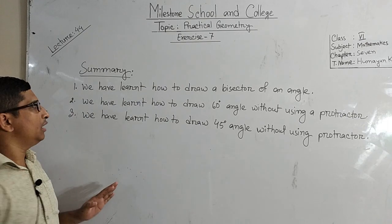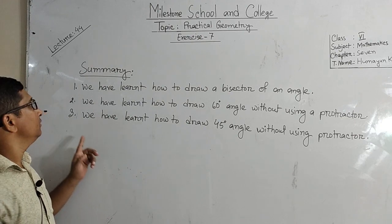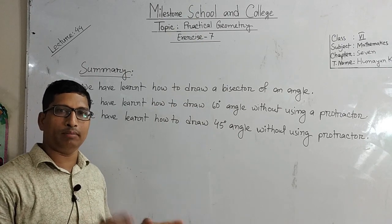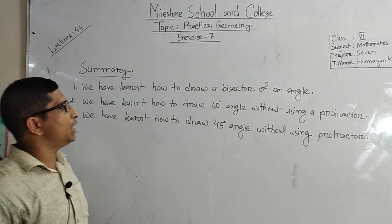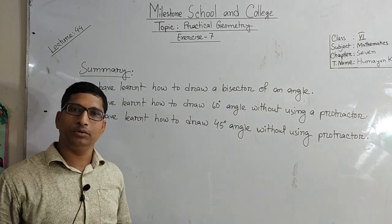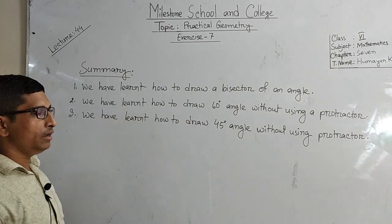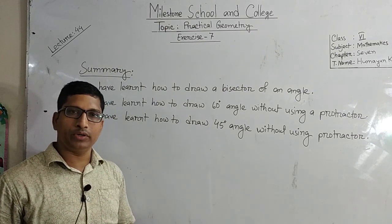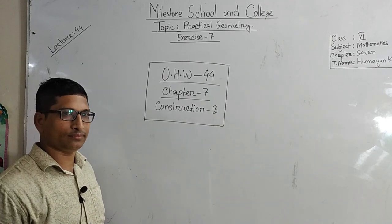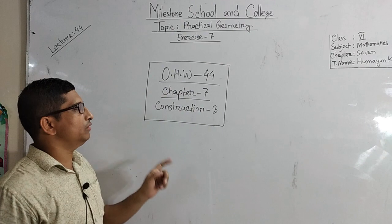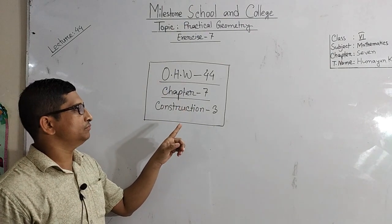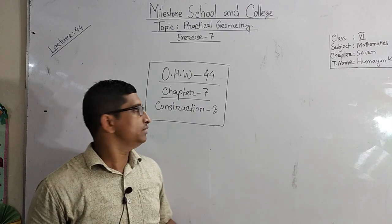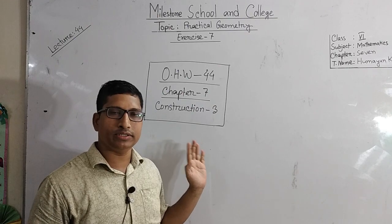Students, after this class, here we have learned how to draw a bisector of an angle, how to draw a 60 degree angle without using a protractor, and how to draw a 45 degree angle without using a protractor. Okay. Homework number 44, chapter 7, construction 3. Students, I hope you enjoyed this class, and this homework you will do on time and submit in time.